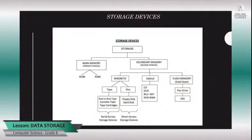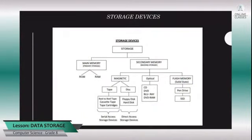Secondary memory is divided into three types: magnetic, optical, and flash memory. Under magnetic we have tape and disk. Under tape we have devices such as cassette tapes, and under disk we have devices such as floppy disk, hard disk, etc. Tape is also called a serial access storage device, whereas disk is also known as a direct access storage device. Under optical — which uses laser to read and write — we have CD, DVD, Blu-ray disk, DVD RAM, etc. The third classification is flash memory, which includes pen drives and SSD, which stands for solid state drive.